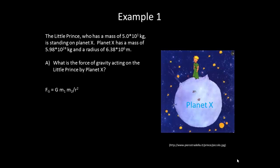Alright, so you should have used our universal law of gravity. Big G times M1 M2 over R squared. And if you plug this in, you should have gotten 490 newtons, and that would be 490 newtons down towards the planet X acting on the little prince.